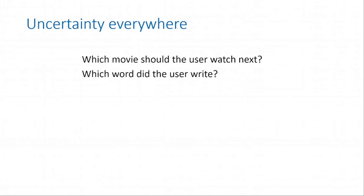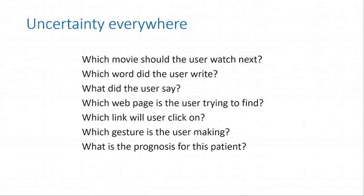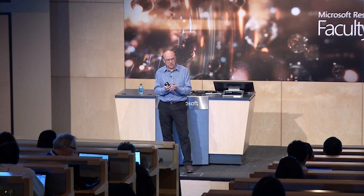We ask questions like: what movie should the user watch next? What word did the user just write with their stylus? What did the user say in speech recognition? Which web page is the user trying to find? Which link will they click? Which gesture are they making? What's the prognosis for this patient? In this data-driven world, it's very rare that we have certainty. So we need to embrace uncertainty as a first-class citizen. And there is a provably unique consistent calculus of uncertainty — probability theory.